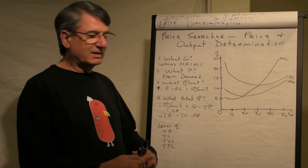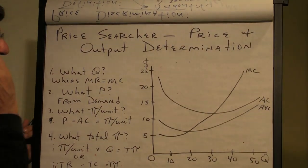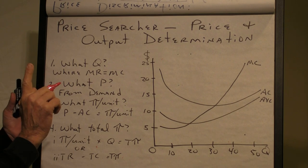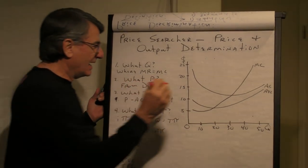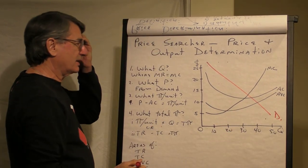I'm here today to talk about Price Searchers, Price and Output Determination. Now, we know that a Price Searcher has a downward sloping demand curve. That's the characteristic of a Price Searcher.